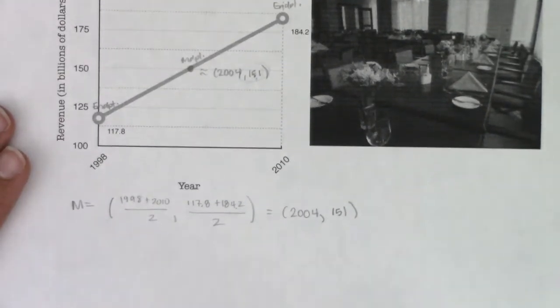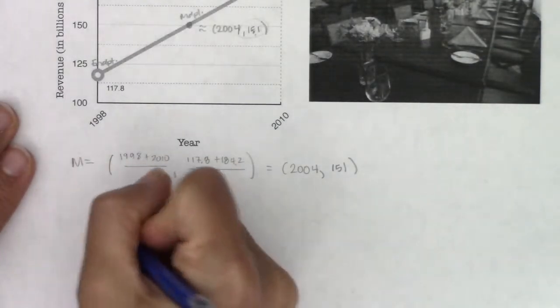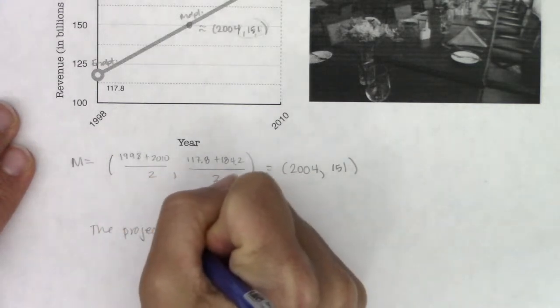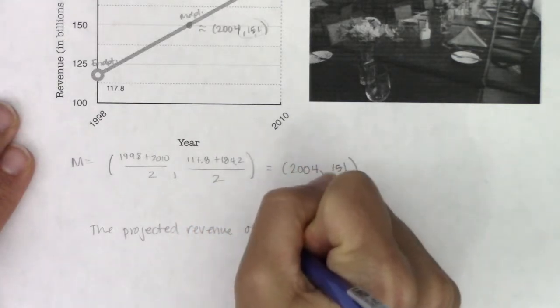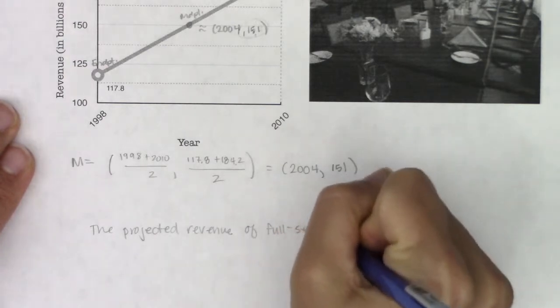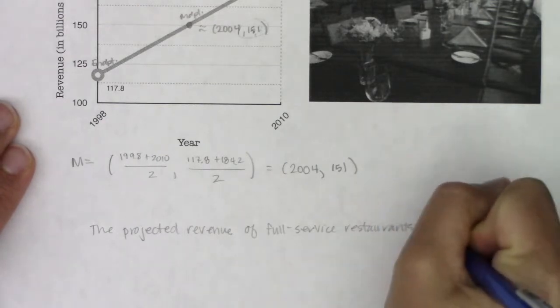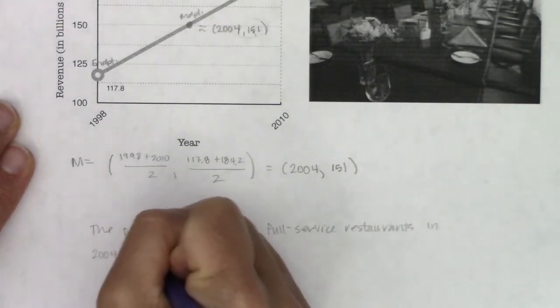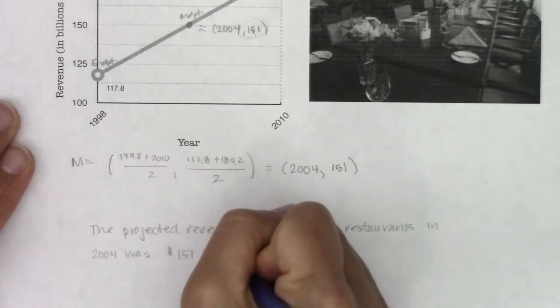It tends to be in math we don't like writing sentences, but let's combine that, especially since we're going to be doing some stats in here. So the projected revenue of full-service restaurants in 2004 was $151 billion.